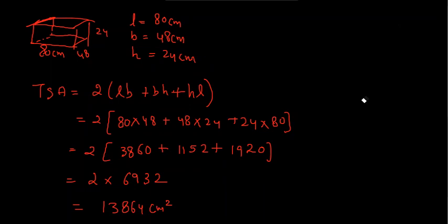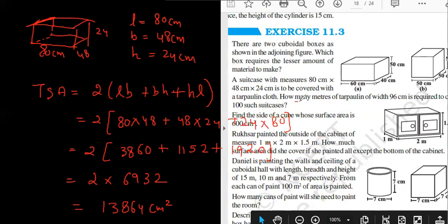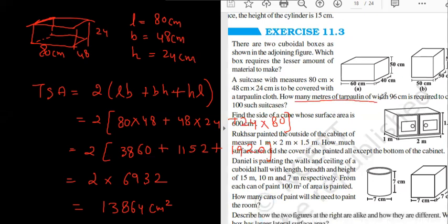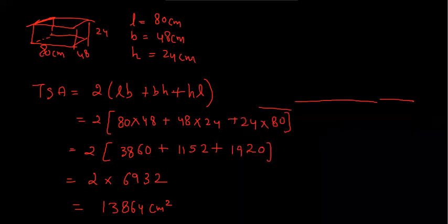Is this thing clear? As of now, is your answer correct? Yeah, it's correct. I made a mistake in calculation, I got the calculation. Okay, now the interesting part: how many meters of tarpaulin cloth of width 96 is required to make 100 such suitcases? So let me just find one suitcase length, then I will find.